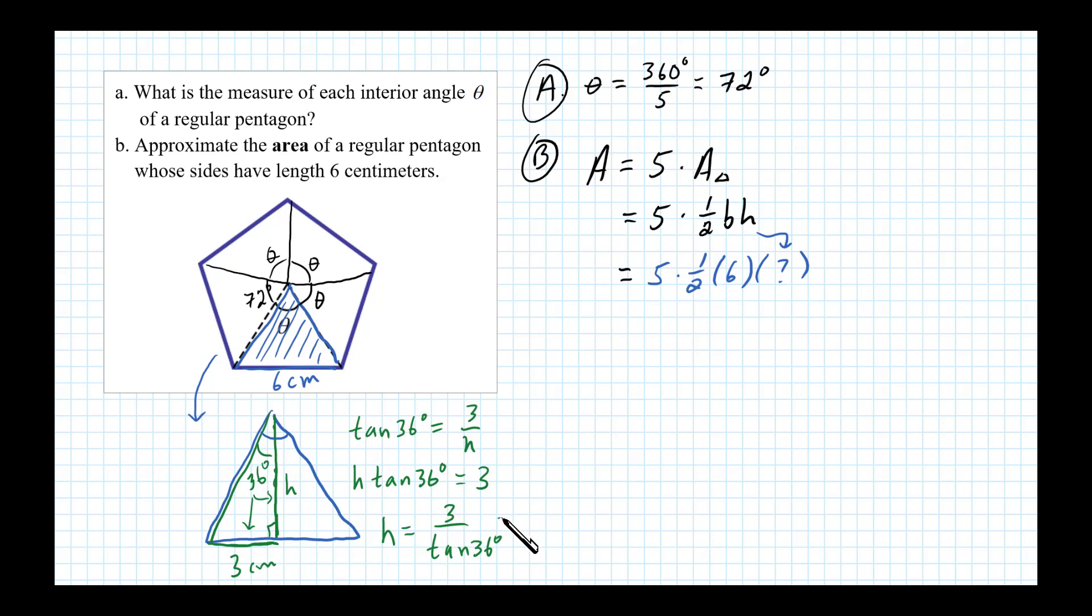All right, so we can use that here for the height of the triangle - that's 3 divided by tangent of 36 degrees. So 5 times the area of each triangle, where the base is 6 centimeters and the height we just found to be 3 over tangent of 36 degrees.